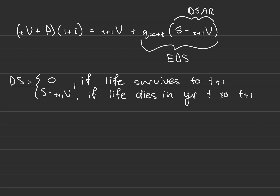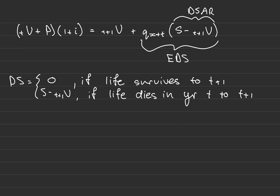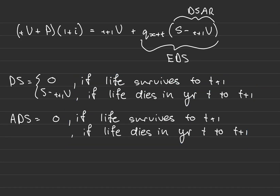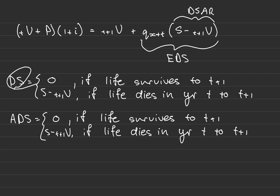Rather than thinking of death strain at risk as the maximum death strain, think of it as the death strain if the life dies — that is what death strain at risk means. Now, the actual death strain for an individual policy equals zero if the life survives to t+1, or S minus t+1 V if the life dies in the year. So the actual death strain equals the death strain for an individual policy.